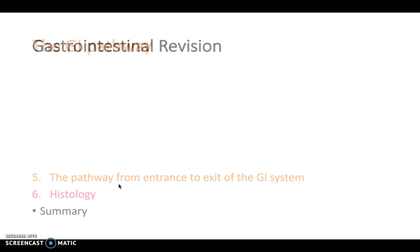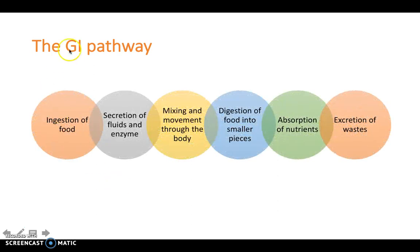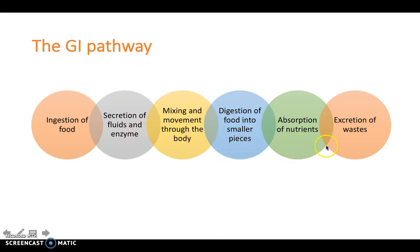Let's think about the overall GI pathway. It starts when we eat. The food moves through the body, mixing and coming into contact with secretions, fluids and enzymes as it goes. It then becomes digested into smaller pieces and absorbed into the bloodstream. Finally the waste products are excreted.